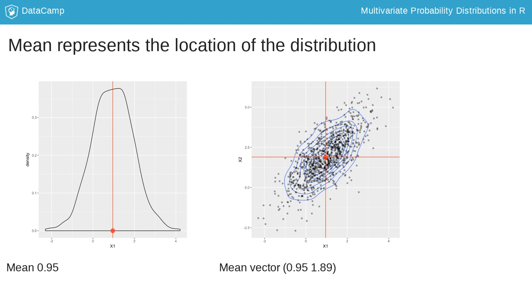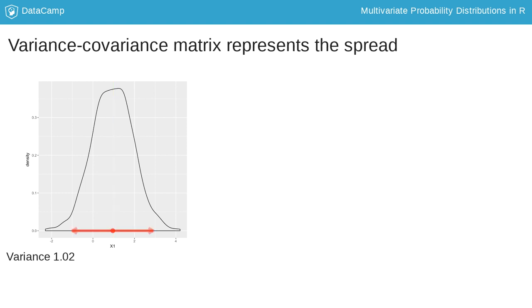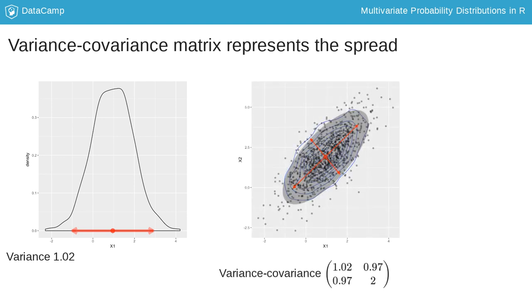In the figure on the right, the red dot represents the bivariate mean. The univariate variance specifies how spread out the observations are from the mean, given by the red line segment. The variance covariance measures spread of multivariate data in several directions. The angle and width of the two red line segments on the right specify the spread of the data along major sources of variation, which is also shown by the gray ellipse.